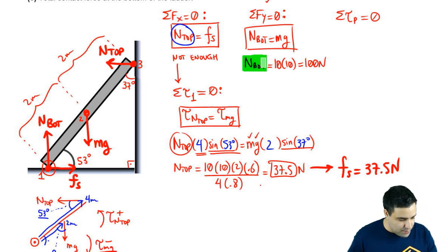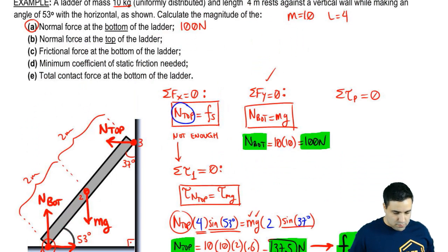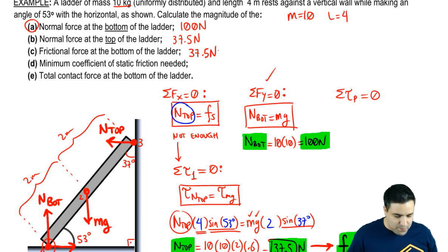As soon as I get this I will be able to know, as soon as I know n top I know friction static as well. Friction static is the same thing as n top. So it's going to be 37.5 just the same. So this was n bottom. This is n top. And this is friction. So if I scroll up over here, 37.5. Normal top at the top. Normal force at the top 37.5 newtons. Frictional force at the bottom of the ladder 37.5 newtons as well.